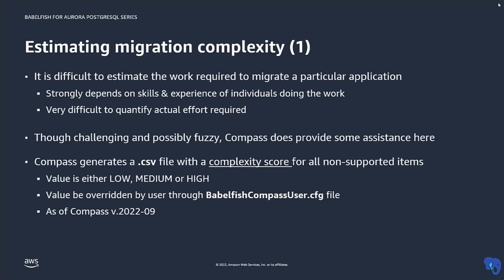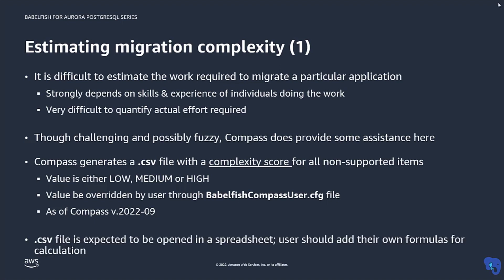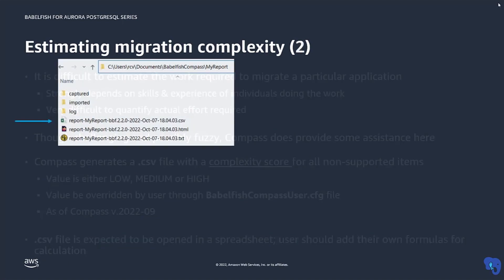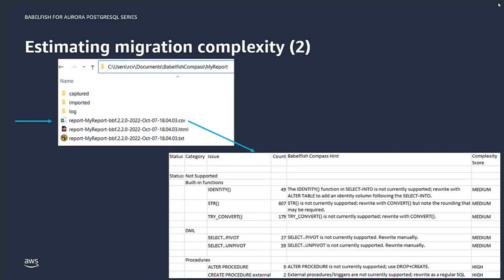As of the Compass version of September 2022, Compass generates a .csv file which has a complexity score for each non-supported item. That complexity score can either be low, medium, or high. The CSV file is intended to be opened as a spreadsheet, and here you can see an example of what that would look like.